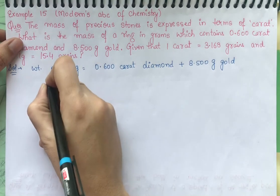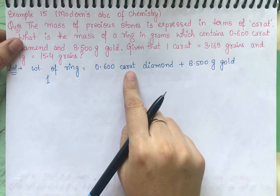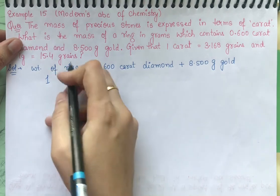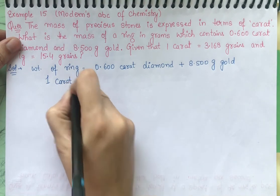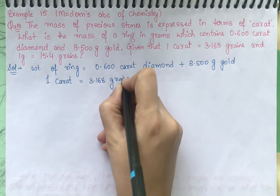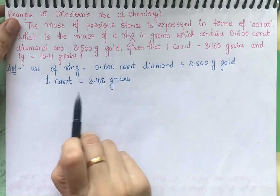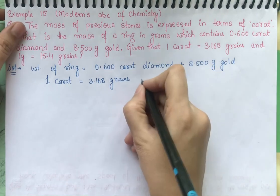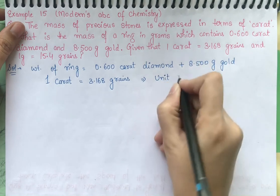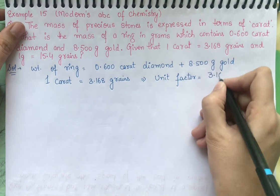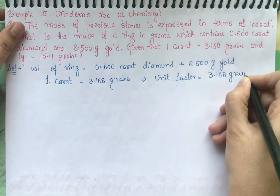We will use the unit factor method. Since 1 carat is in the numerator, we need to cancel it. The carat value in terms of grains must go in the denominator. 1 carat equals 3.168 grains, so our first unit factor is 3.168 grains per 1 carat.